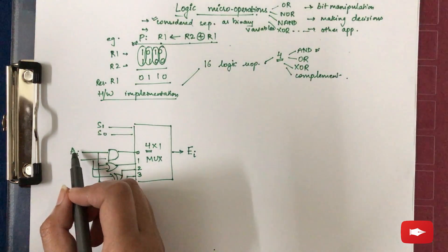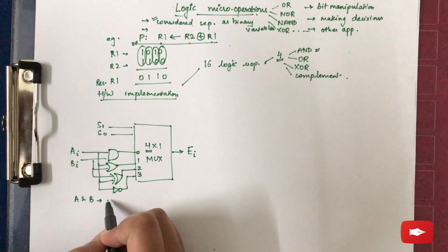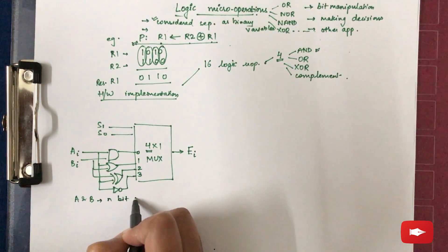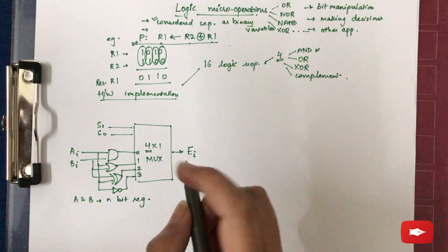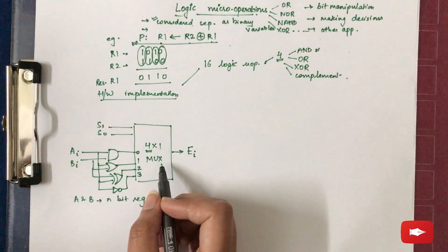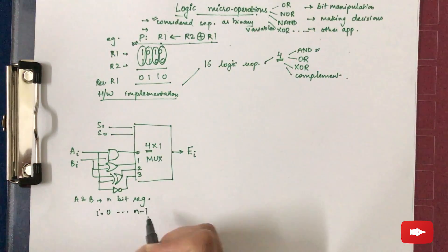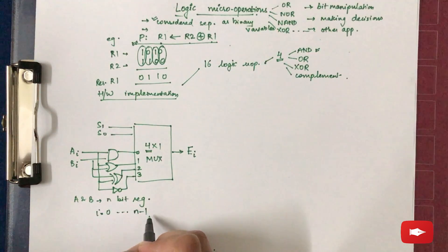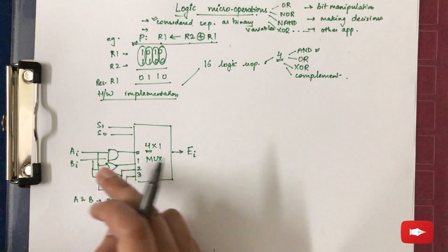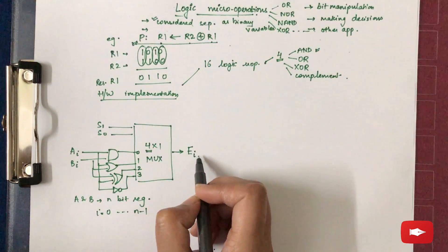...and as we say, hence the diagram must be repeated N times for I starting from 0 to N-1. For every individual bit, this diagram will be repeated. Hence we are writing A_I and B_I.